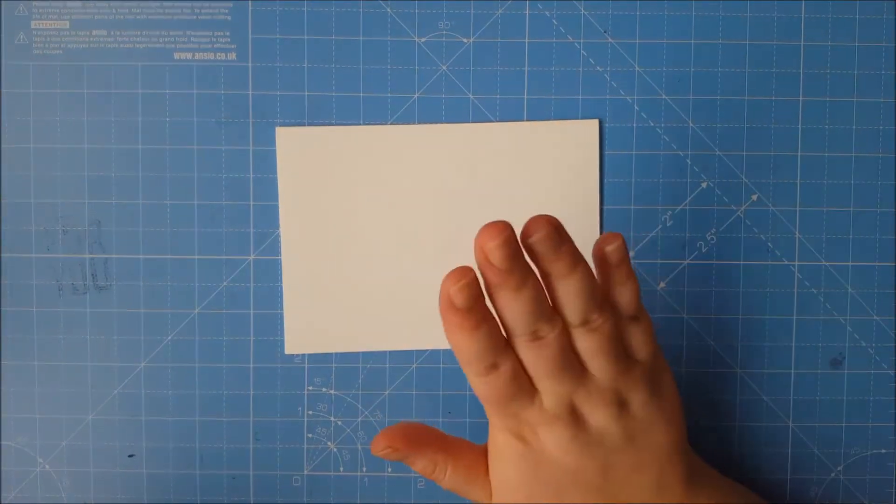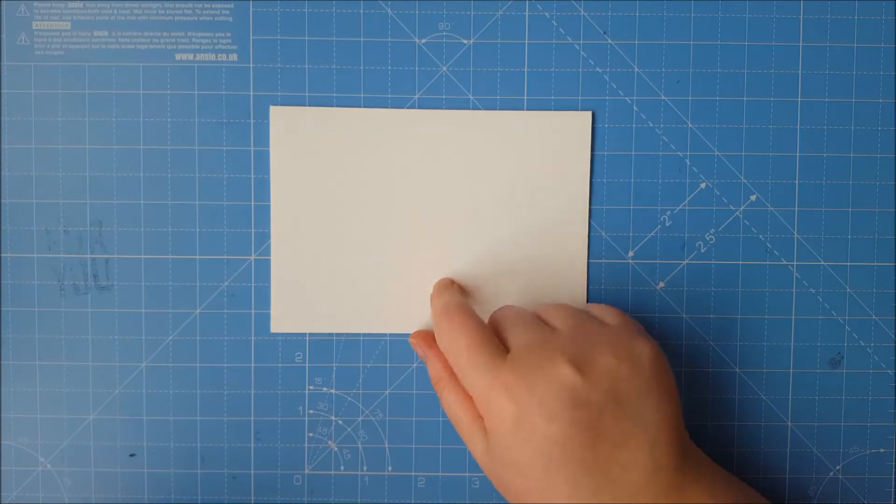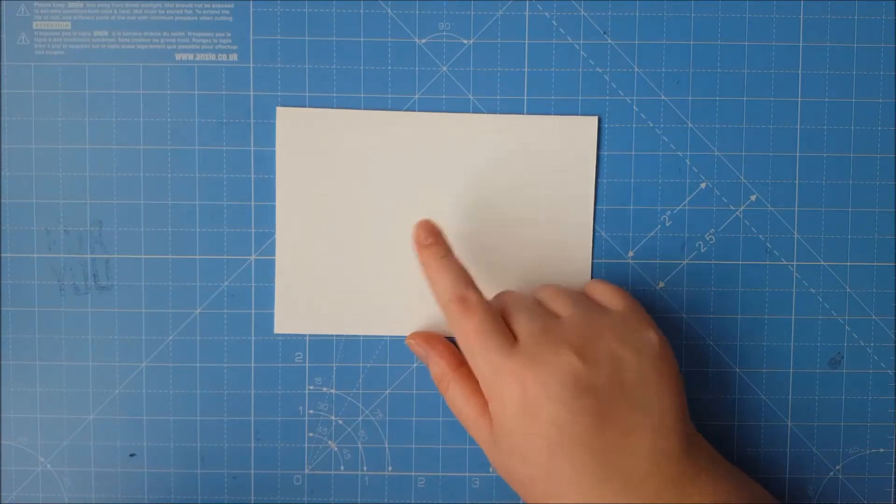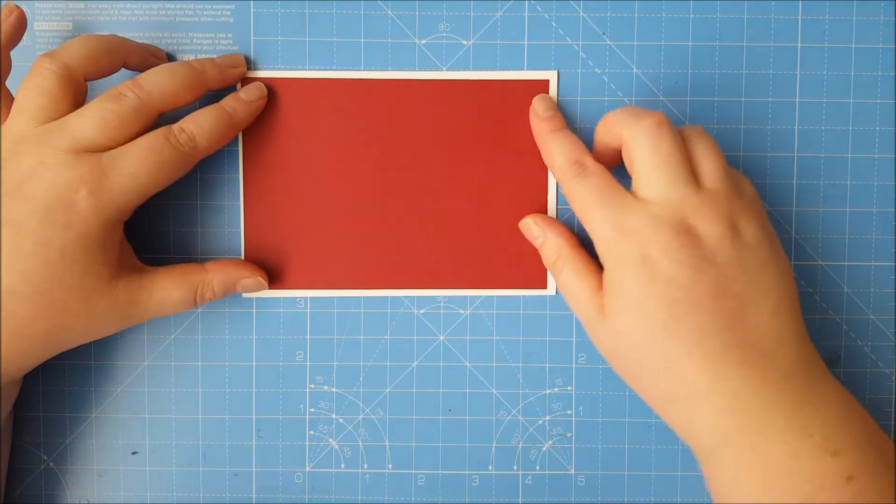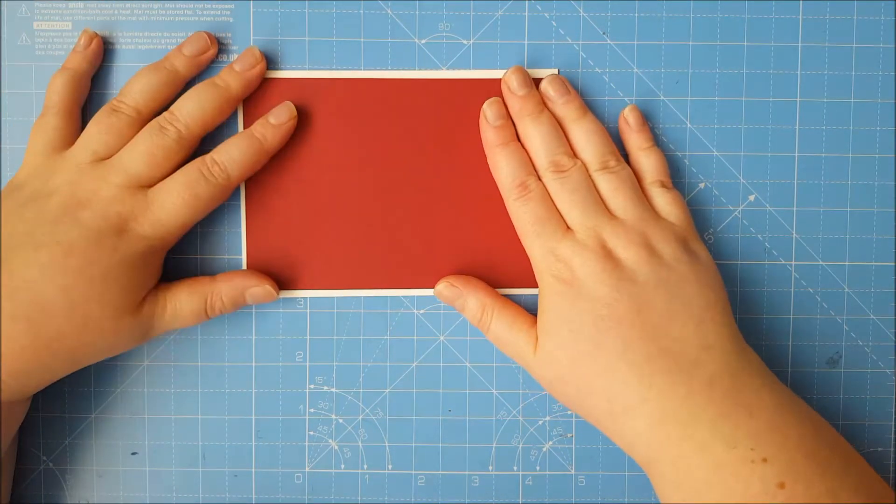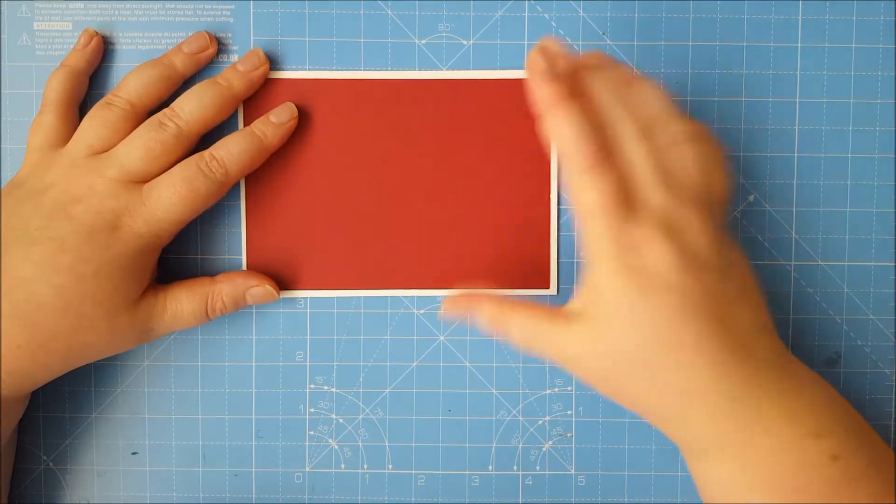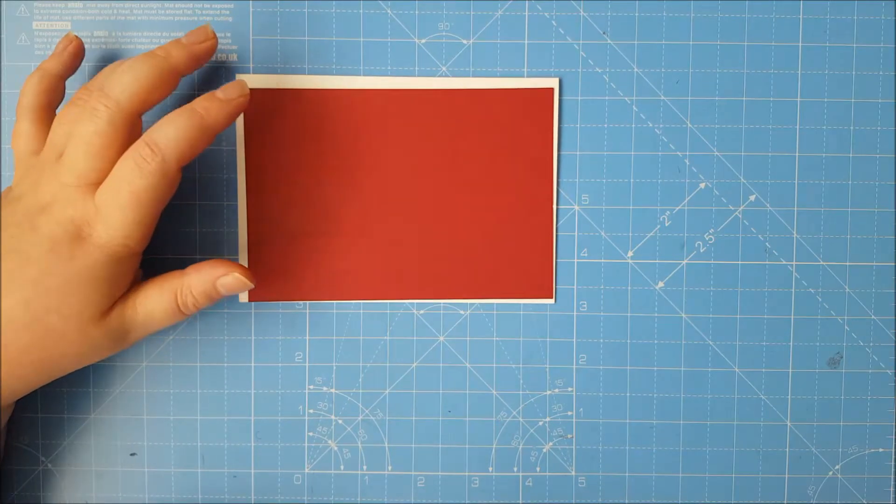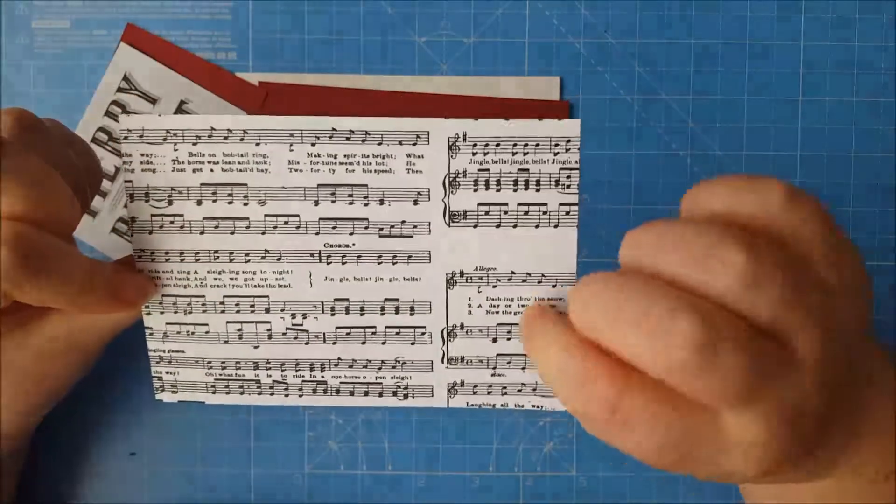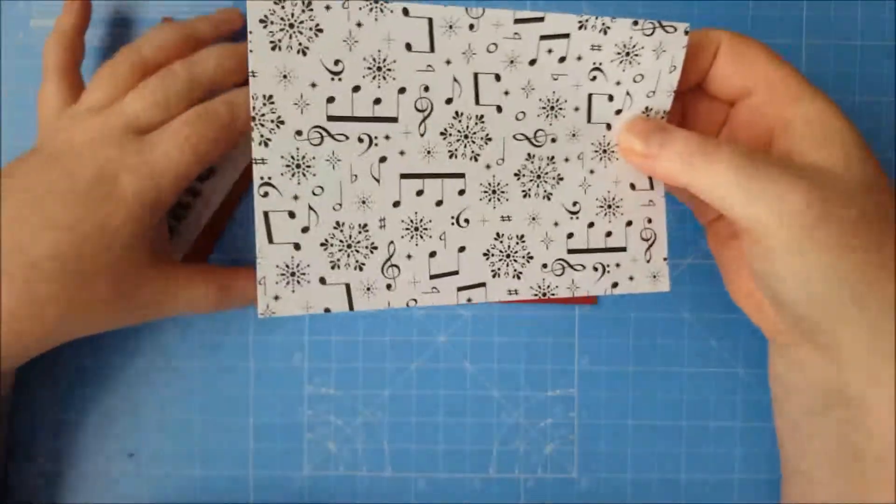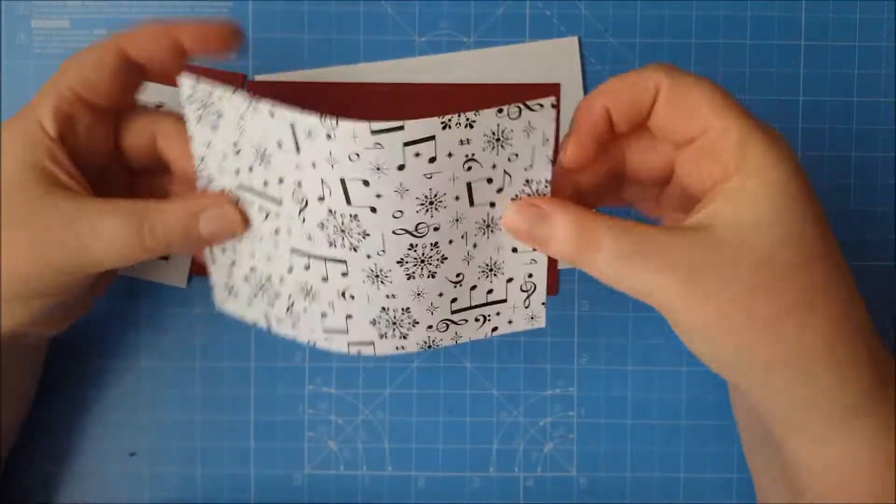Other things you'll need. You'll need a card base. So this is Thick Whisper White C6 size. You'll need a Cherry Cobbler panel, which I've cut slightly smaller. I will put the measurements for these on my blog, which will be in the description bar below. You'll also need some of this really nice Merry Music Designer Series paper. You get a load of this in the pack. And it is slightly thinner.